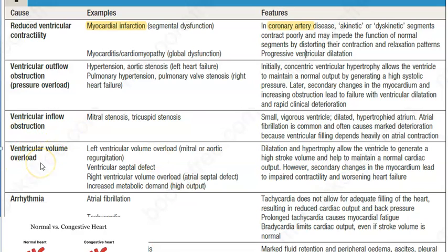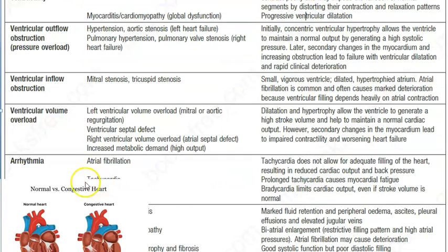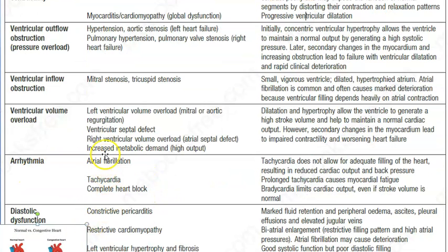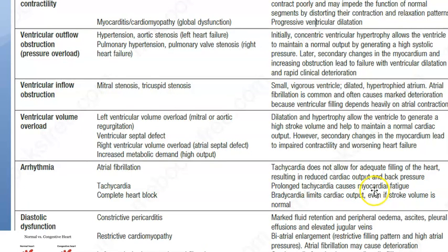Ventricular volume overload places extra burden on the heart. Initially the heart tries to compensate and pump harder, but in the long term this leads to impaired contractility and worsening heart failure. Arrhythmias such as atrial fibrillation or tachycardia also cause heart failure because there is no adequate filling of the heart, resulting in reduced cardiac output and back pressure.